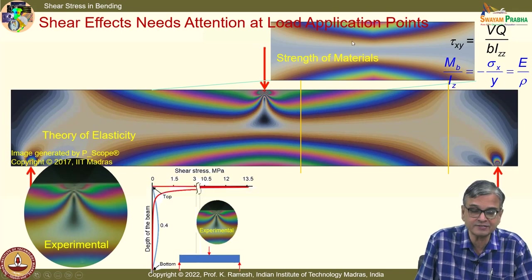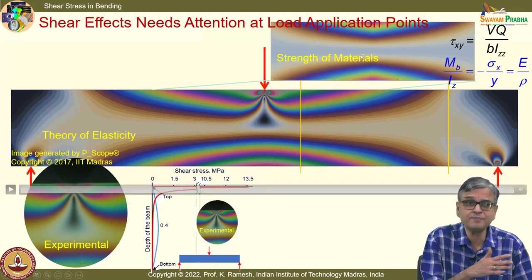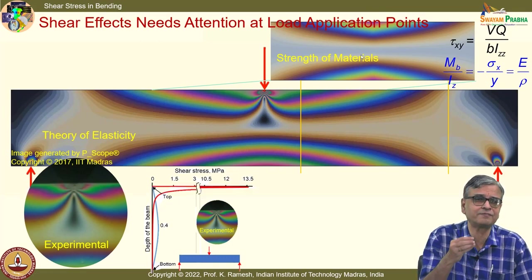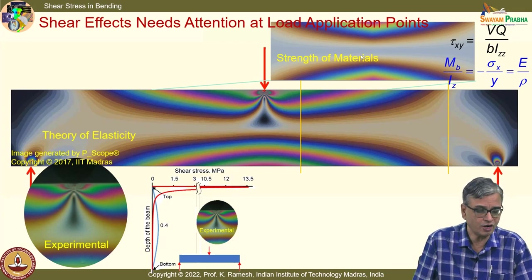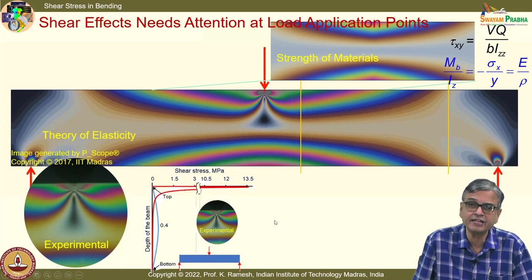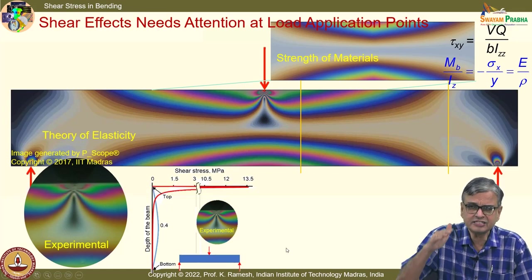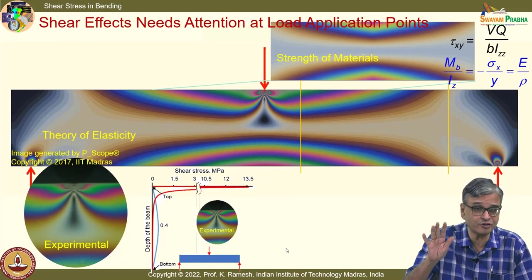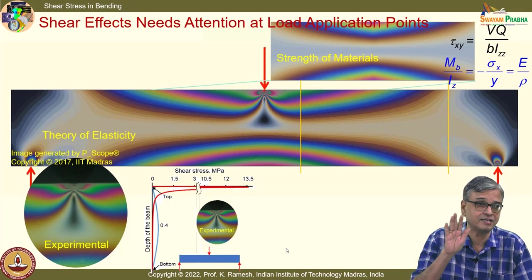In the case of strength of materials, it totally misses out this aspect because we have taken shelter under Saint-Venant's principle. Near load application points, shear magnitudes are very high — just below the surface it reaches a peak. At the surface it is still zero because it must satisfy the free surface requirement.